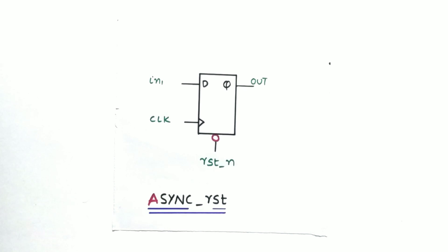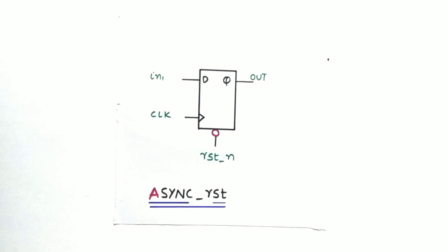Whenever the reset signal is set high in the active high condition, or zero in the active low condition, the output must go back to the initial condition. So the reset has a higher priority here rather than the input.